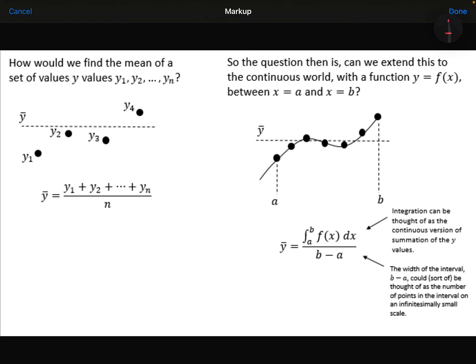So that's demonstrated on the left-hand side here, where we've got four different points, and I want to work out their mean value. So I just add their sizes together and divide it by four.